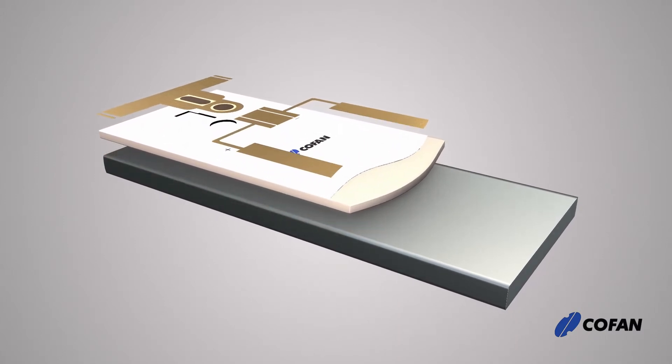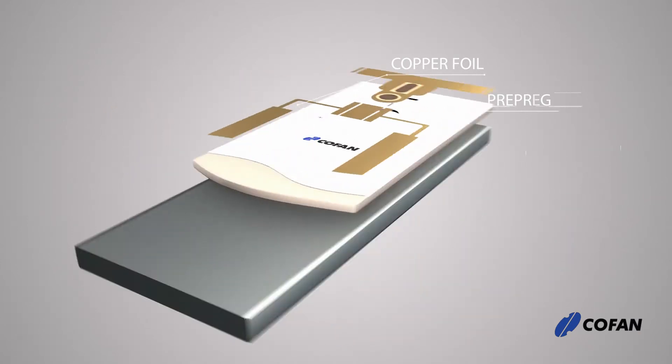MCPCBs are made up of three main materials: aluminum or copper base, the dielectric pre-peg as the insulator, and the copper foil. These materials are laminated together to form the MCPCB.